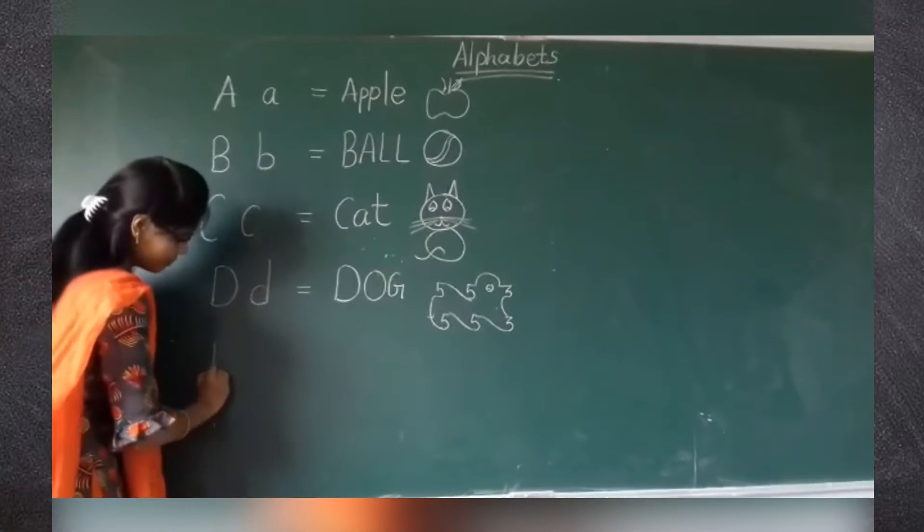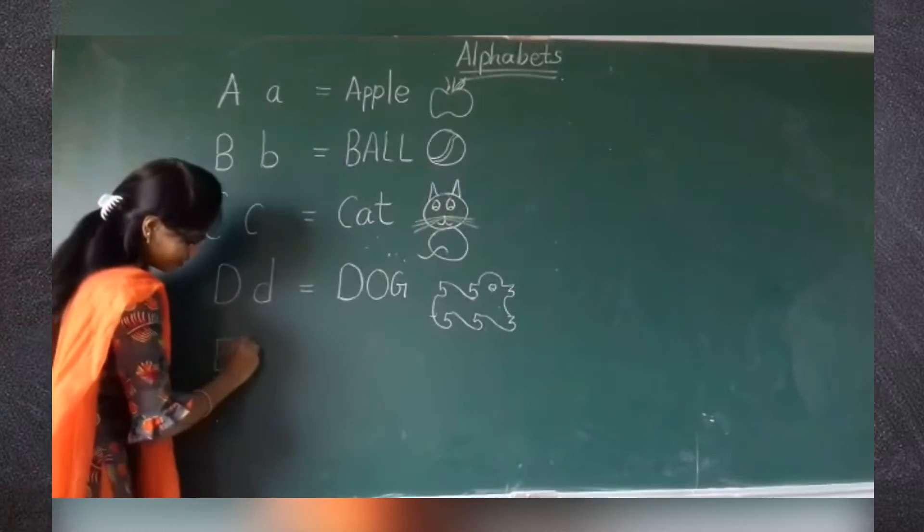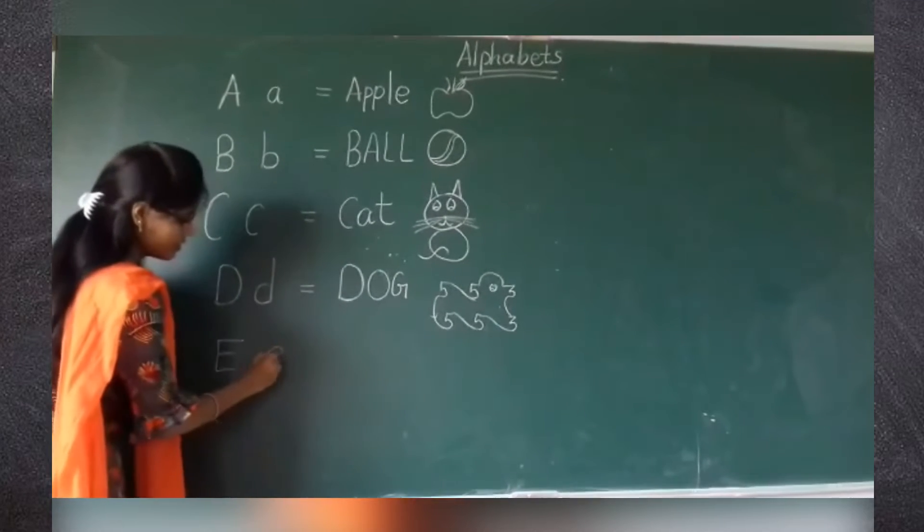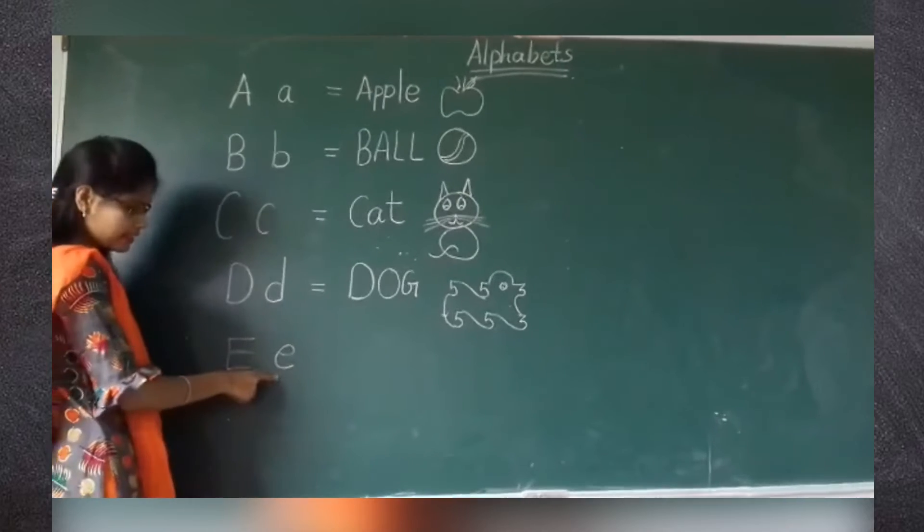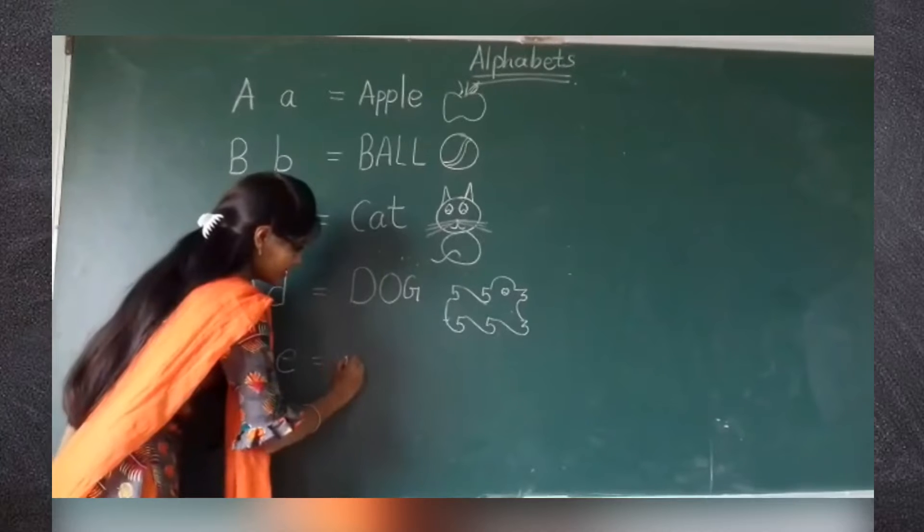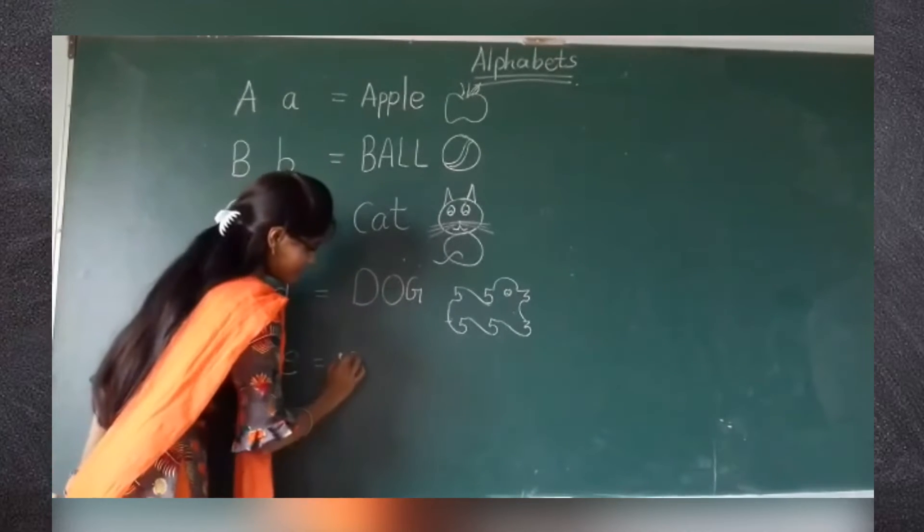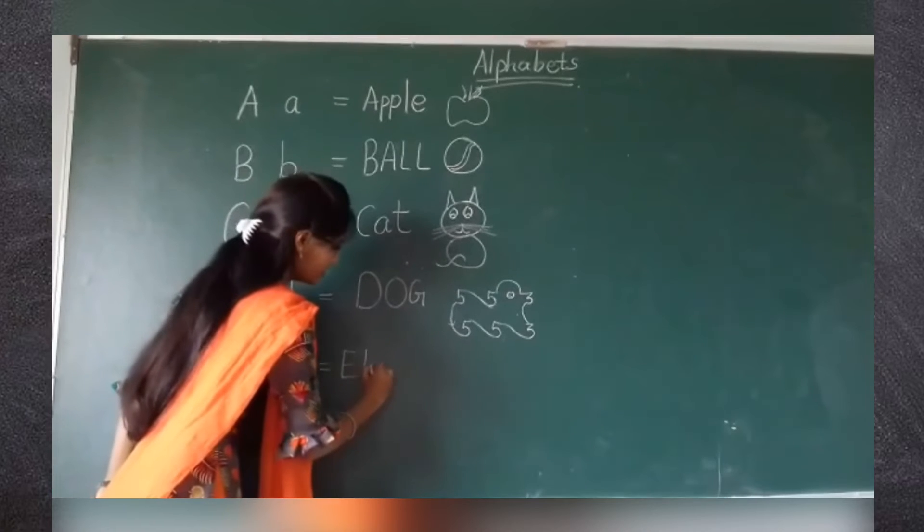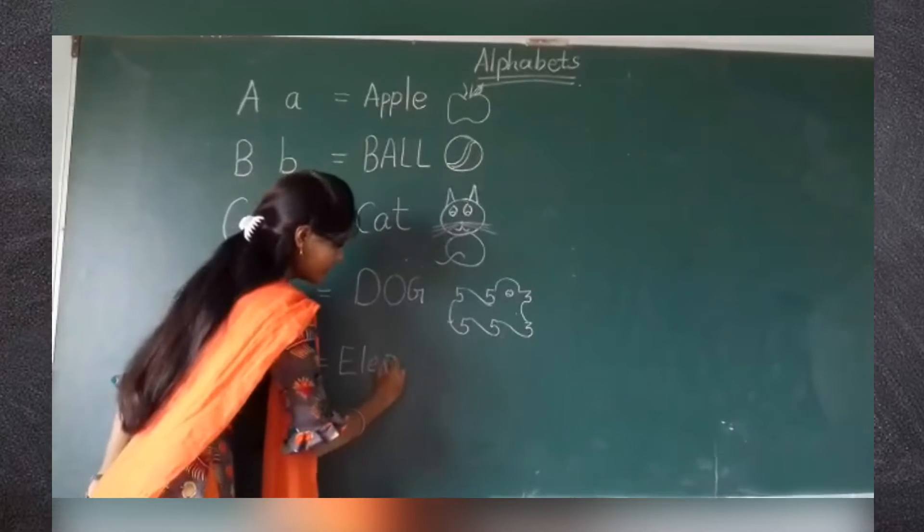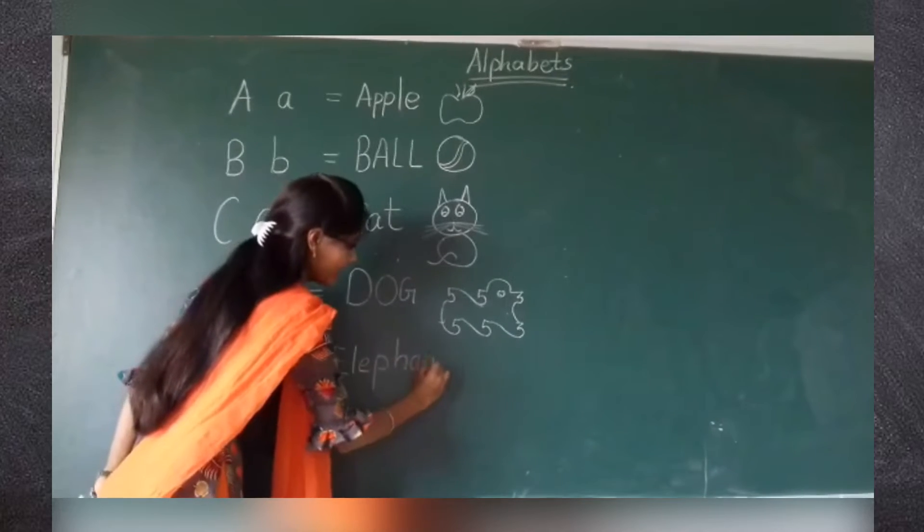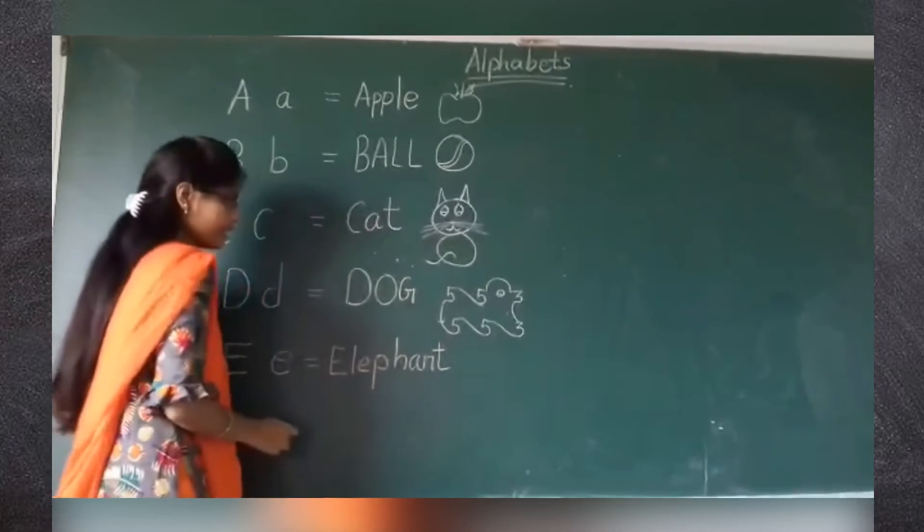Next to it the letter is E. This is capital E and this is small e. E for elephant. Spelling of elephant is E-L-E-P-H-A-N-T. Elephant.